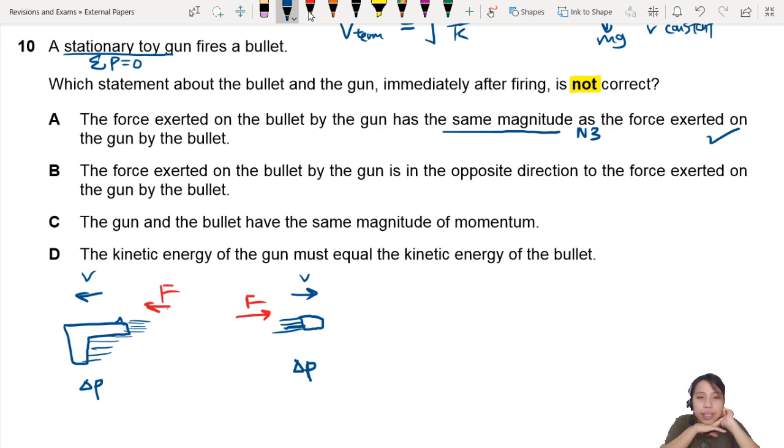Part B. The force exerted on the bullet by the gun is opposite direction to the force exerted on the gun by the bullet. So one's pointing left, one's pointing right. So, sounds good. Okay. It's also about Newton's third law.